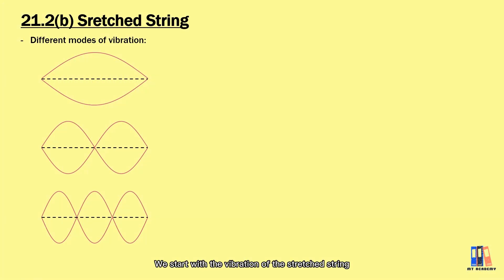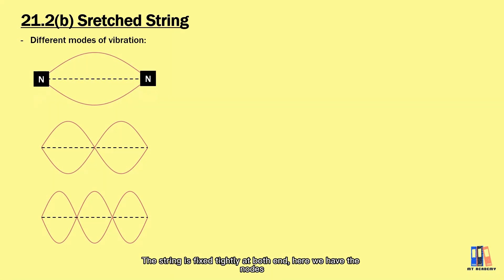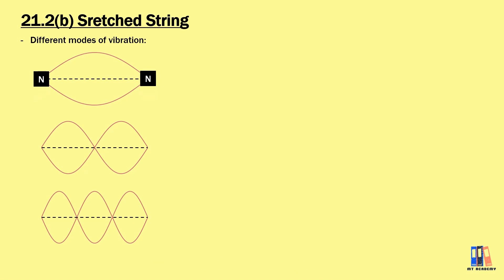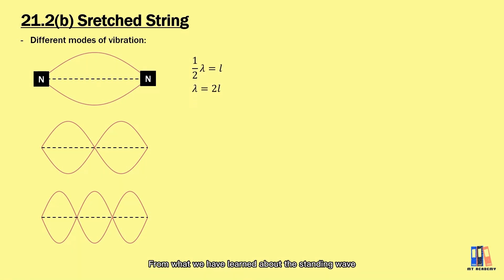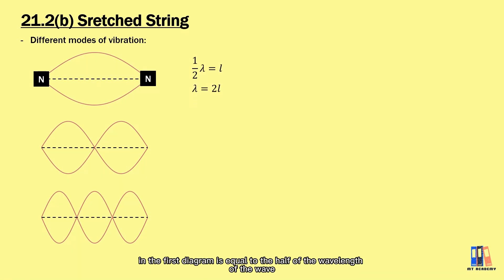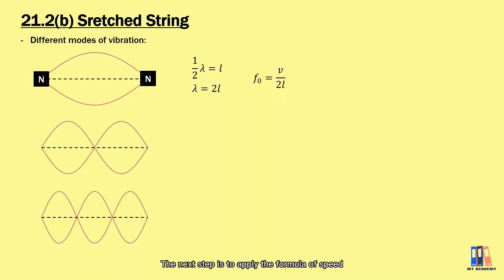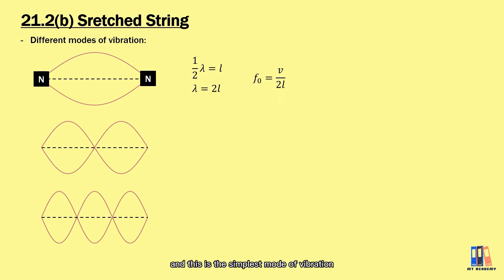We start with the vibration of the stretched string. From the word 'stretch,' it means there is a tension applied on the string, just like the string in a guitar. The string is fixed tightly at both ends, so here we have nodes. The vibration can have different modes, and the fundamental mode has only two nodes at both ends of the string. To analyze the resonant frequency, we identify the relationship between the length of the string and the wavelength. The length of the string in the first diagram is equal to half of the wavelength. Applying the formula V = fλ, the resonant frequency is V divided by 2L — this is the simplest mode of vibration.